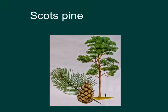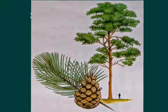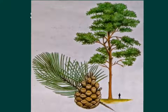Scots pine is a native tree. It's a very distinctive shape with cones, an evergreen tree with very long needles, and easily recognizable. It's from this tree that we get the timber used in the woodwork room called red deal.